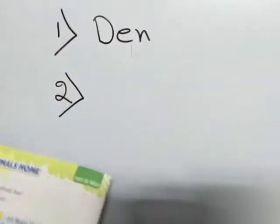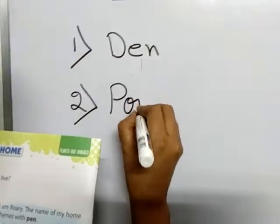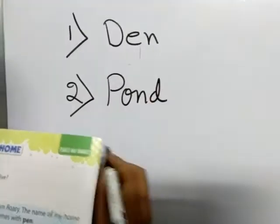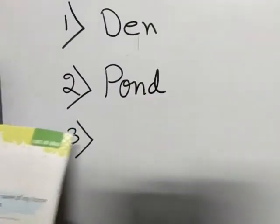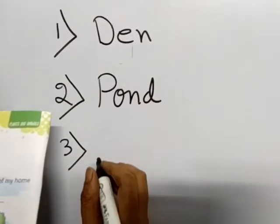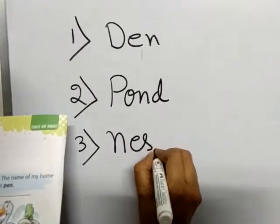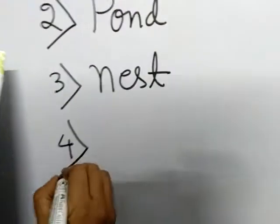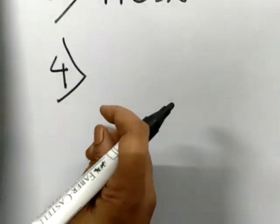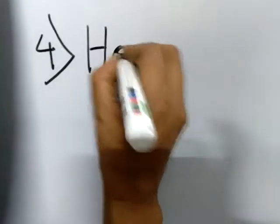Number 2: pond, P-O-N-D, pond. Number 3: rhymes with waste is nest, N-E-S-T, nest. Number 4: rhymes with pole is hole, H-O-L-E, hole.